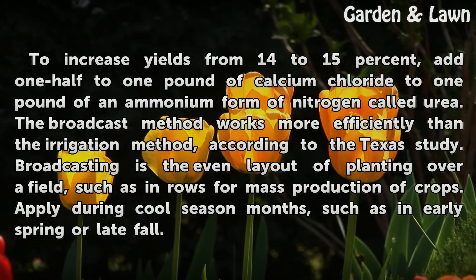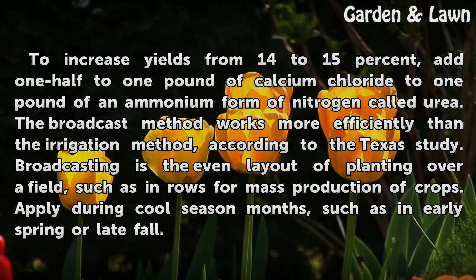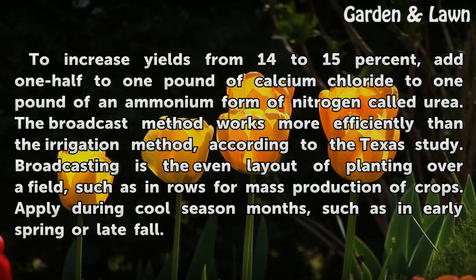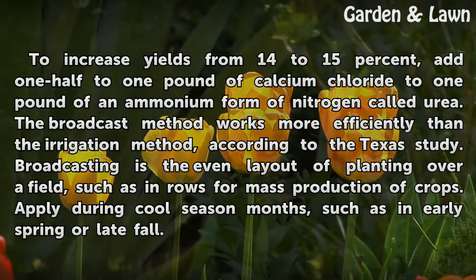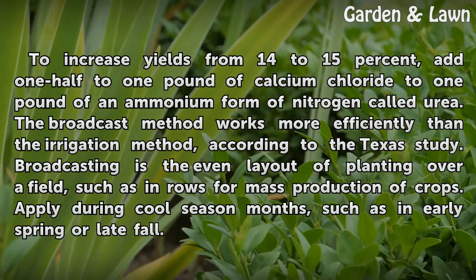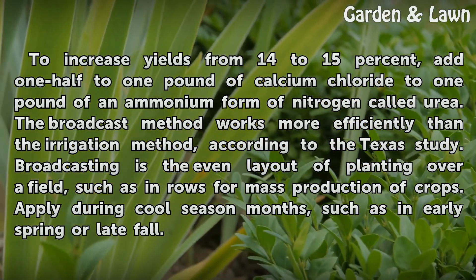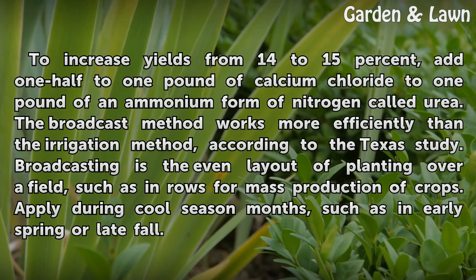To increase yields from 14 to 15%, add ½ to 1 lb of calcium chloride to 1 lb of an ammonium form of nitrogen called urea. The broadcast method works more efficiently than the irrigation method, according to the Texas study.